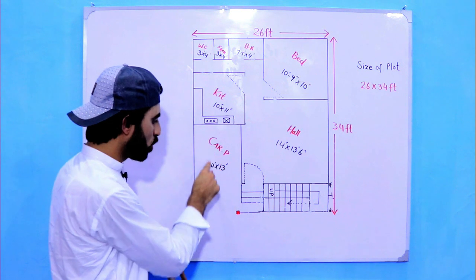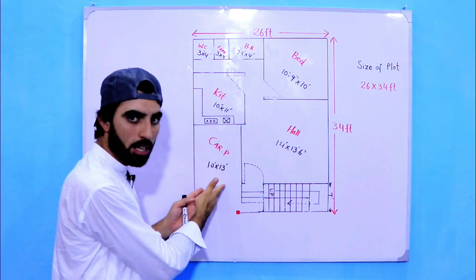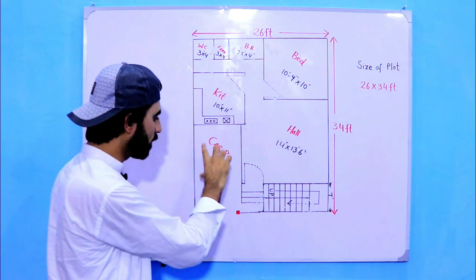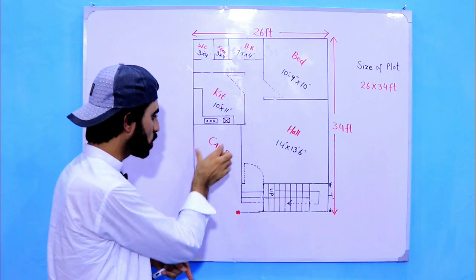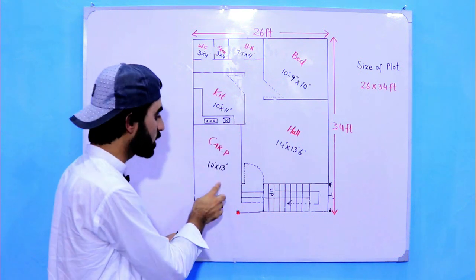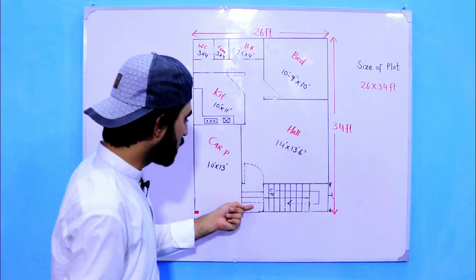In this main gate, this is car porch which size is 10 feet by 13 feet. Width is 10 feet and length is 13 feet. You can see these are two steps for this hall or living room.